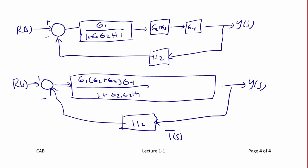And we'll have T(s) is equal to g1 times the quantity g2 plus g3 times g4 over 1 plus g1, g2, h1.